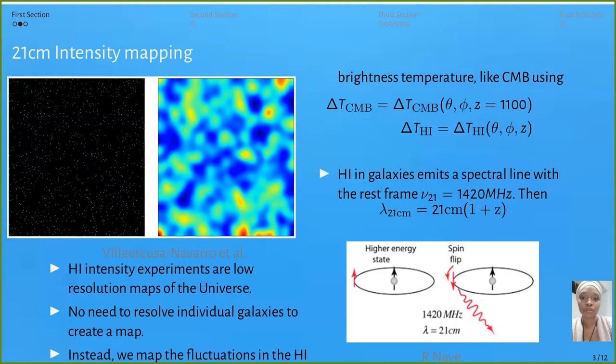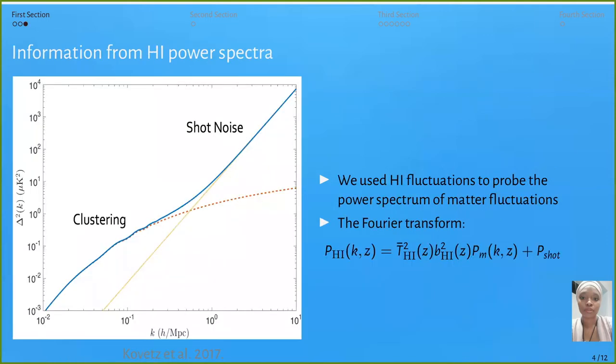H1 in galaxies emits a spectral line with rest frequency of 1420 megahertz. When we observe that, we get the information using this model: 21 centimeter times (1 plus redshift).